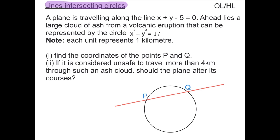Our first example says a plane is travelling along the line x + y - 5 = 0. Ahead lies a large cloud of ash from a volcanic eruption that can be represented by the circle x² + y² = 17. We're also told to note that each unit represents 1 kilometre.